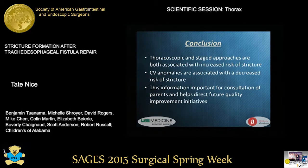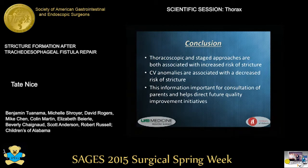In conclusion, thoracoscopic repair and a staged approach were both associated with an increased risk of stricture formation, while the presence of cardiovascular anomalies was associated with a decrease in stricture formation. This information is important in the consultation of parents regarding prognosis and the possible need for future dilations, as well as providing direction for future quality improvement initiatives to decrease strictures.